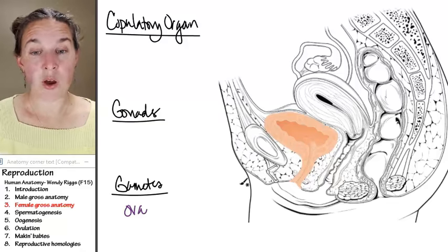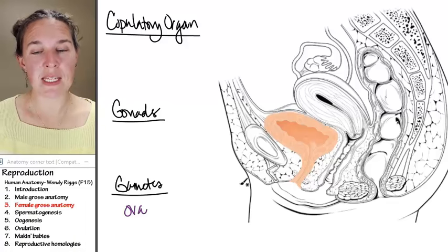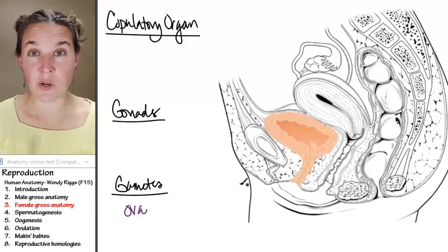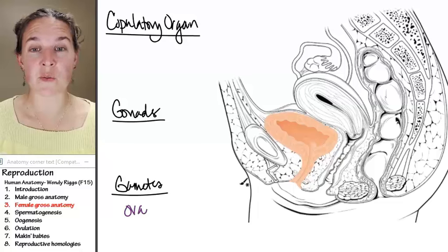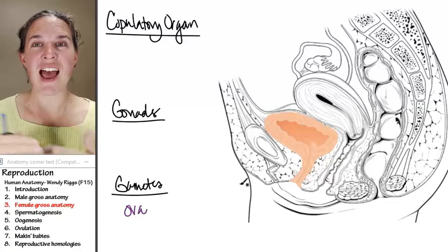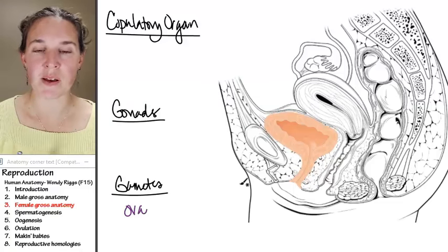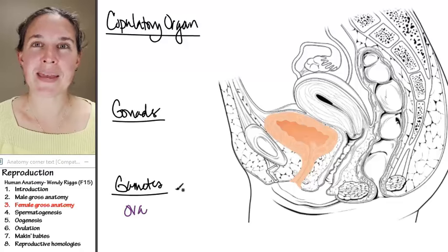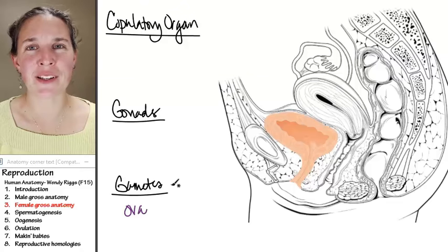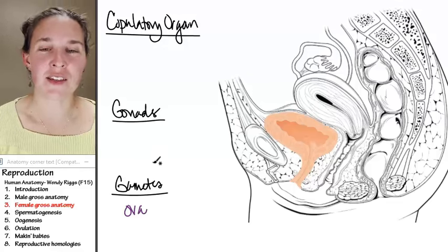Just like sperm, the ovum has 23 chromosomes. It has half the number of chromosomes, which means it's haploid. And that's how we end up making a baby. That cute little baby. Good thing they're cute.